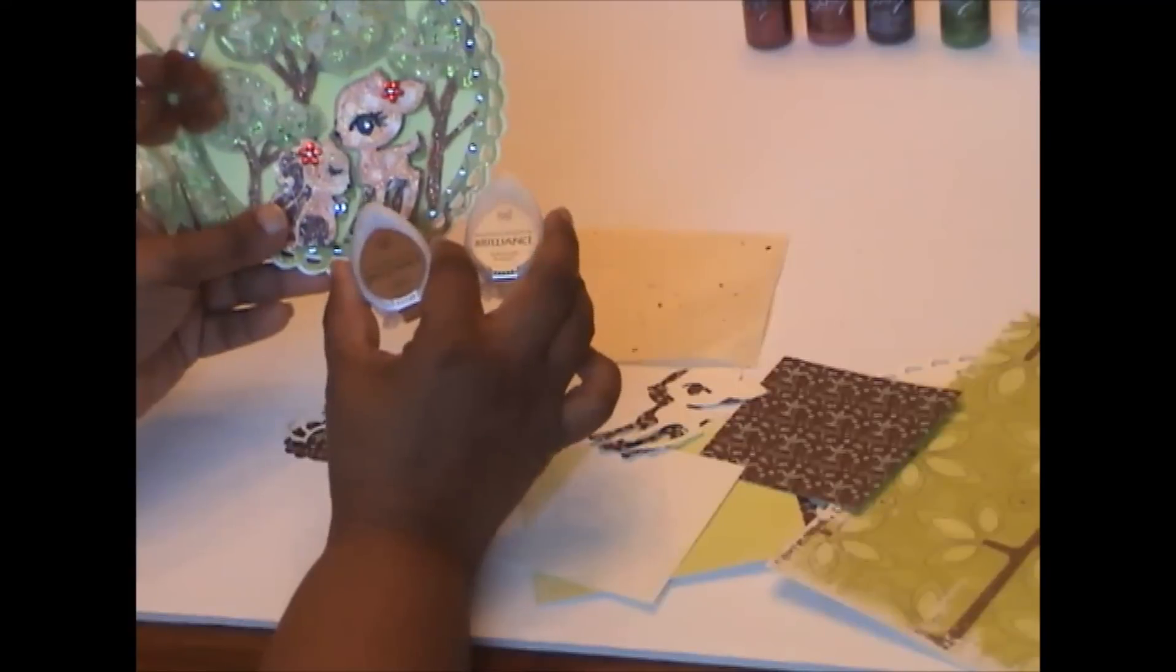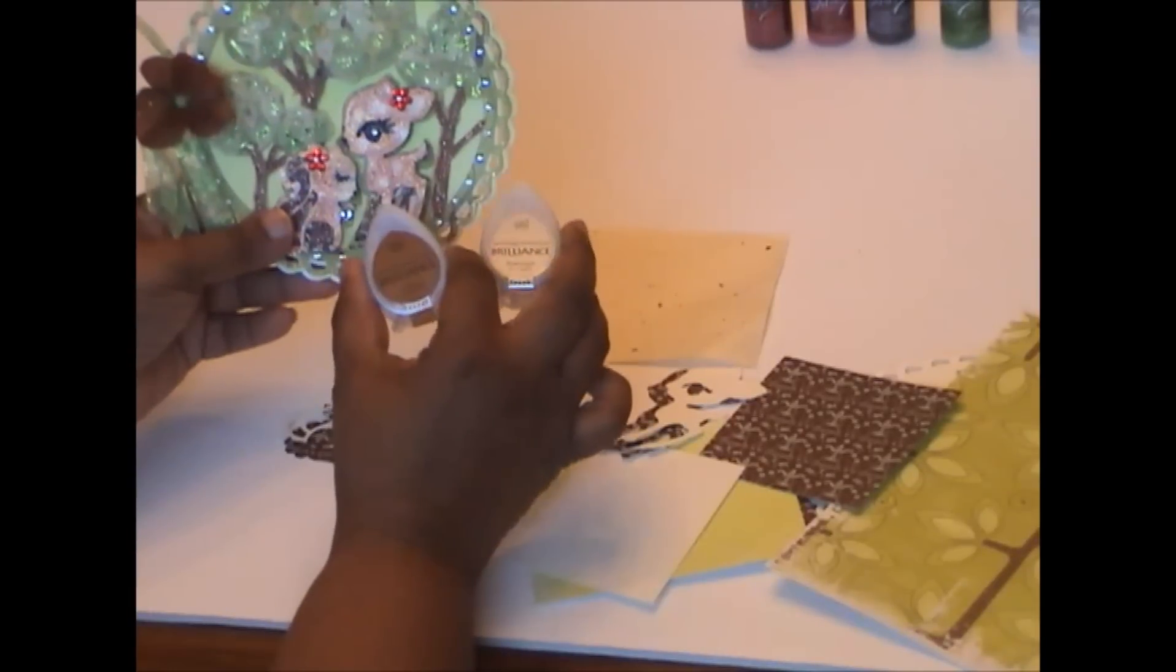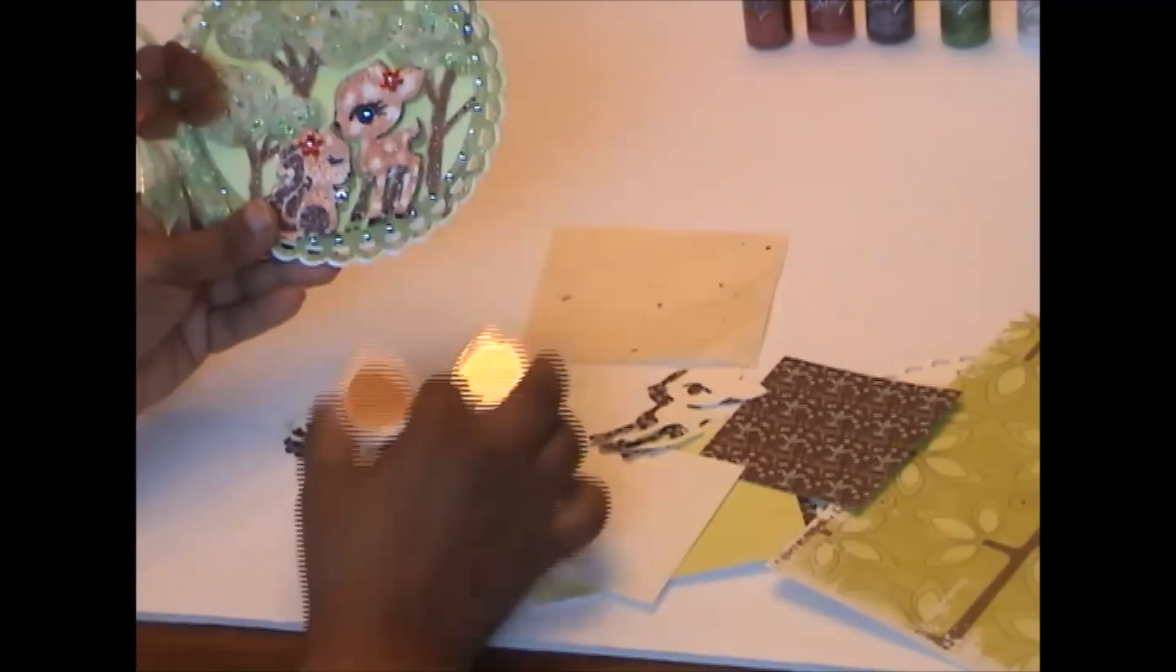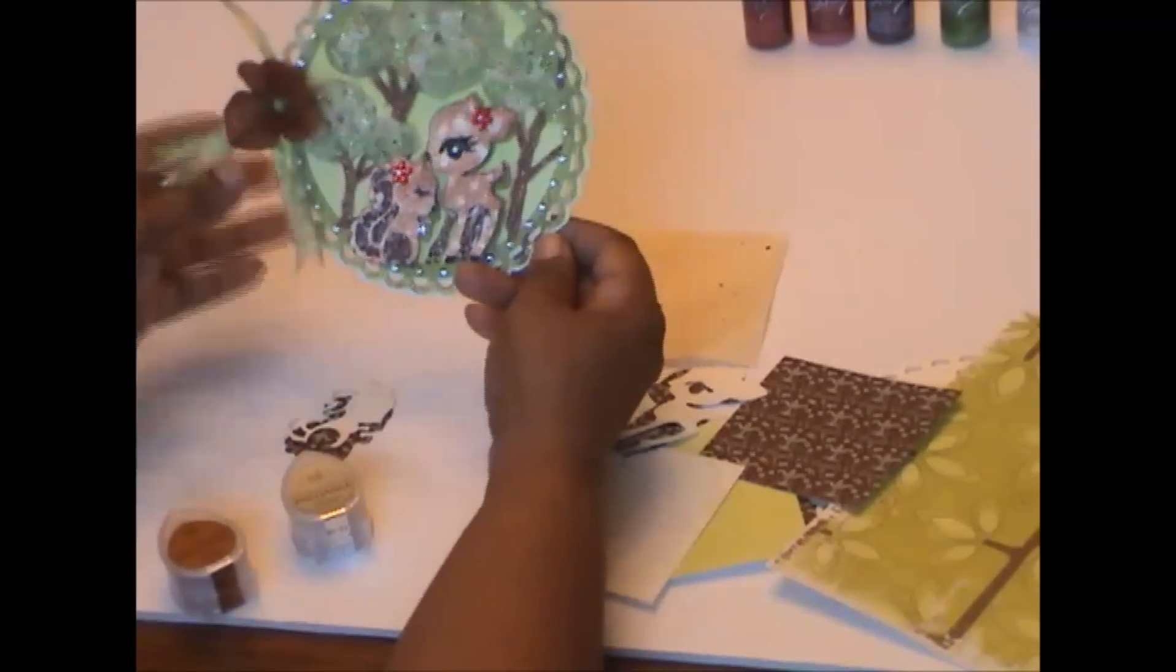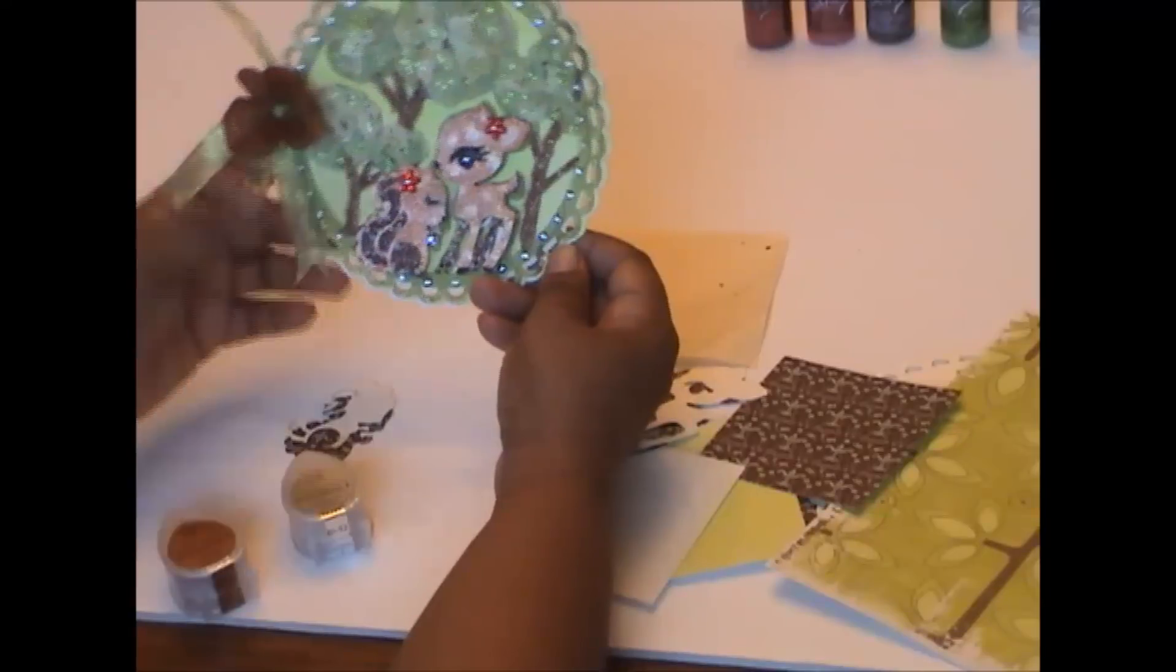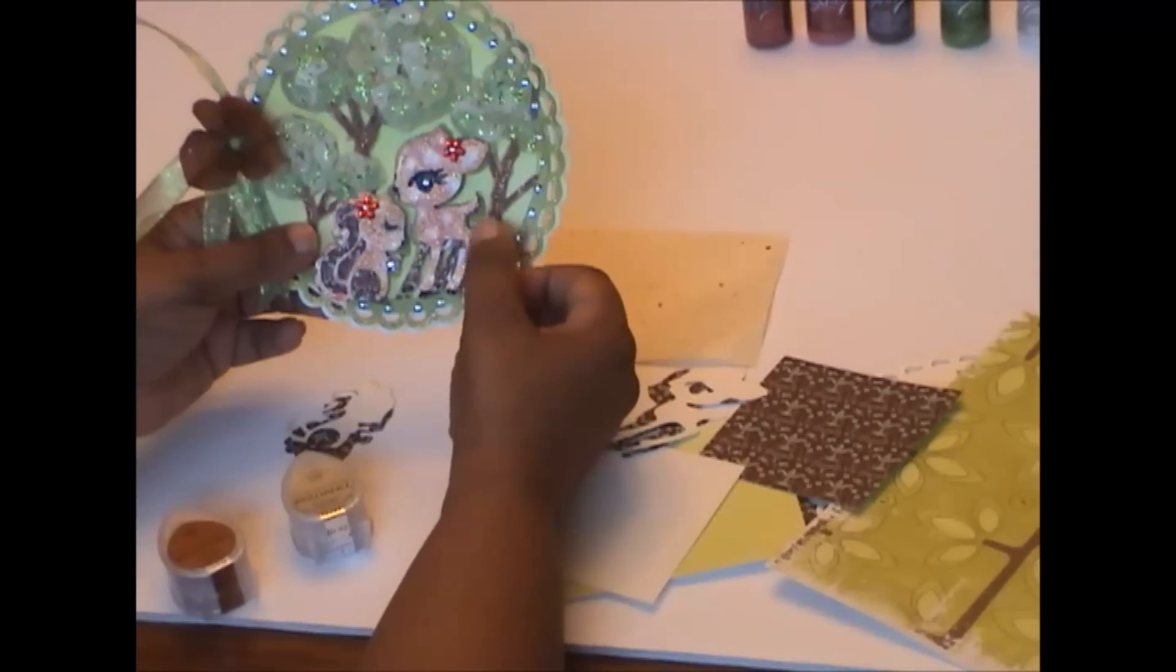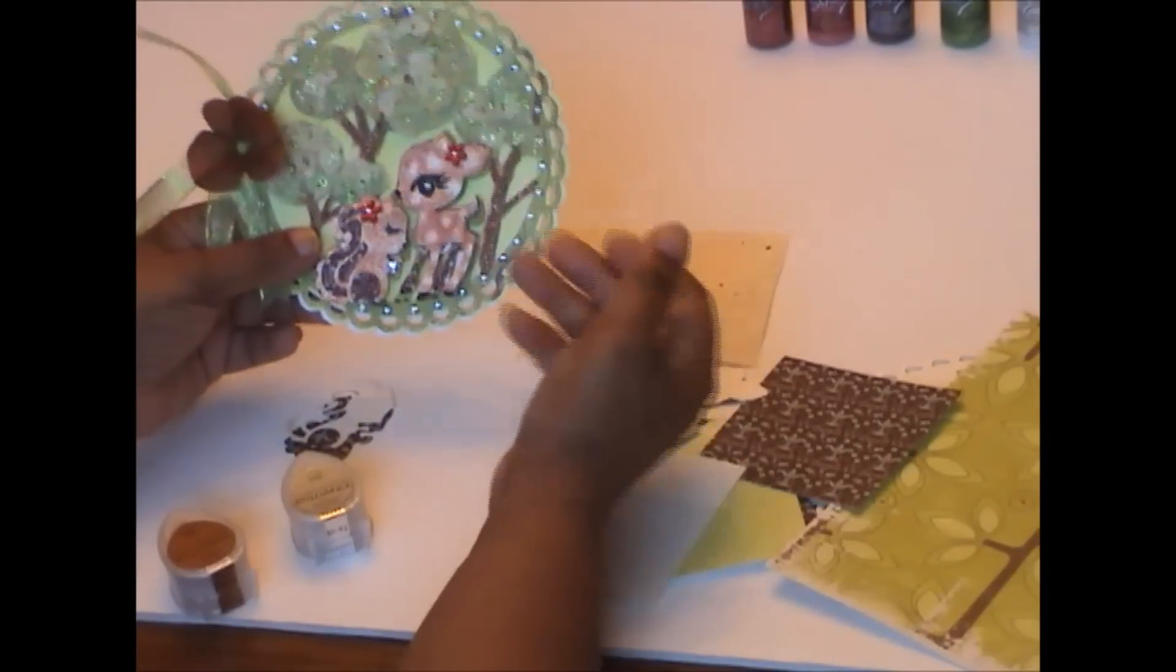I felt inking or painting or Copic marker, that would be the best way to go so that it has a soft blend in places. And then for it to pop up a little bit more, I just added some stickles.